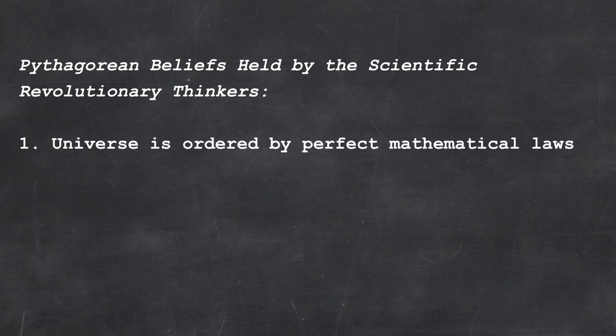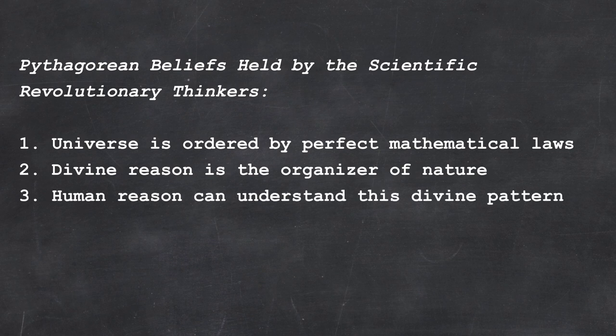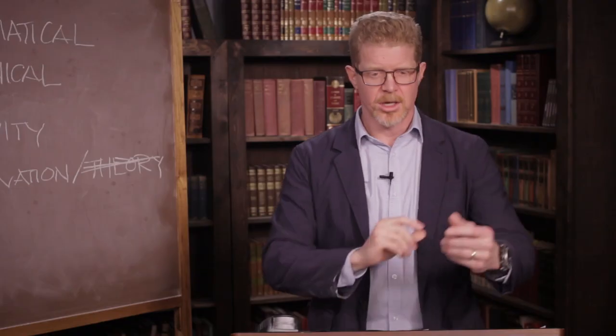One, the universe is ordered by perfect mathematical laws. Two, divine reason is the organizer of nature. It didn't just happen. Divine reason organized it. And then three, and this is important. Human reason can understand this divine pattern. Now you really do. And I would argue, I won't argue this here, but I think that you actually need something like this in order to have any sort of science or physics at all. And certainly Newton and other scientists of the scientific revolution thought that also.